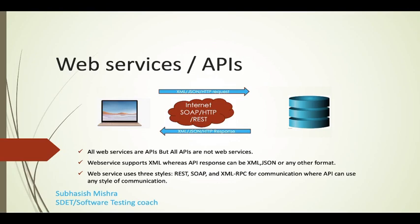Many people ask: what is the difference between a web service and an API? All web services are APIs, but all APIs are not web services — that's very important to remember. Web services support XML, whereas an API response can be XML, JSON, or any other format. Web services use three styles — REST, SOAP, and XML-RPC — for communication, whereas an API can use any style of communication.